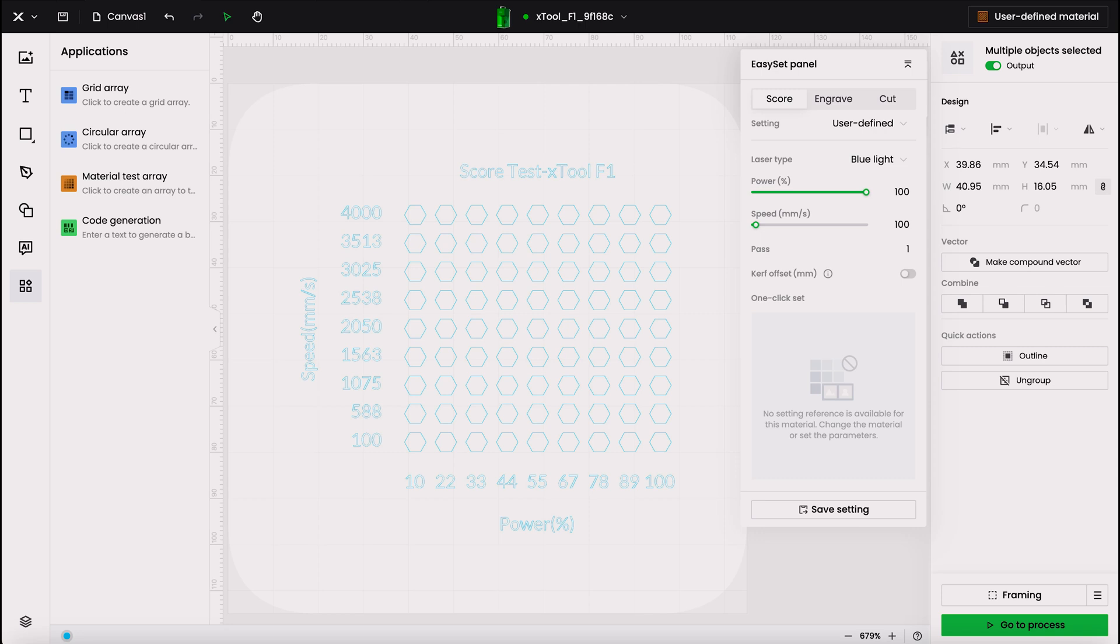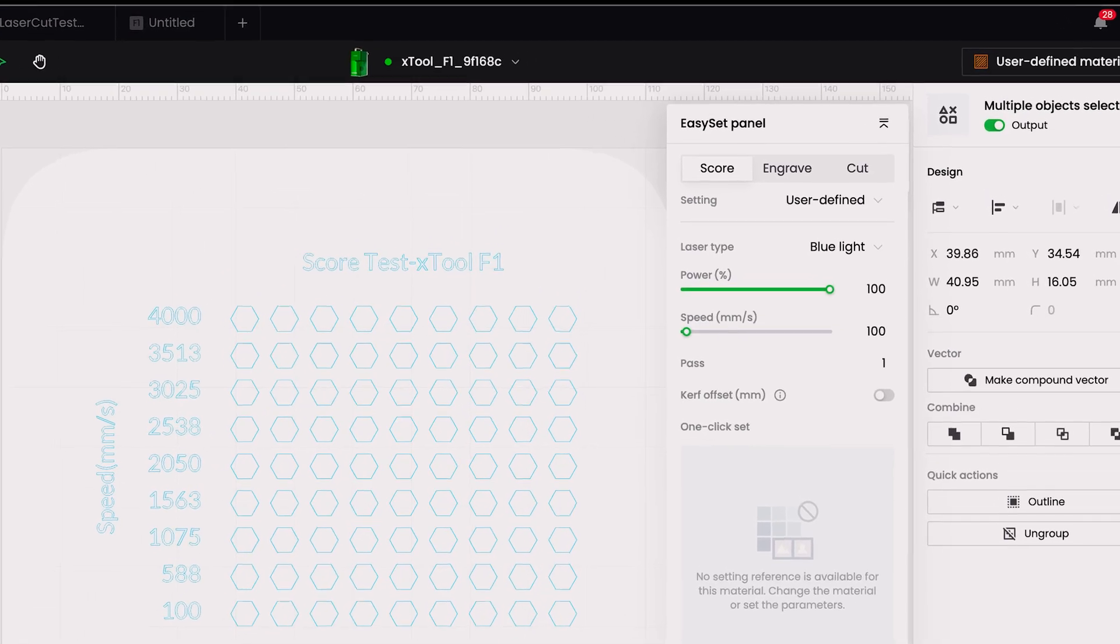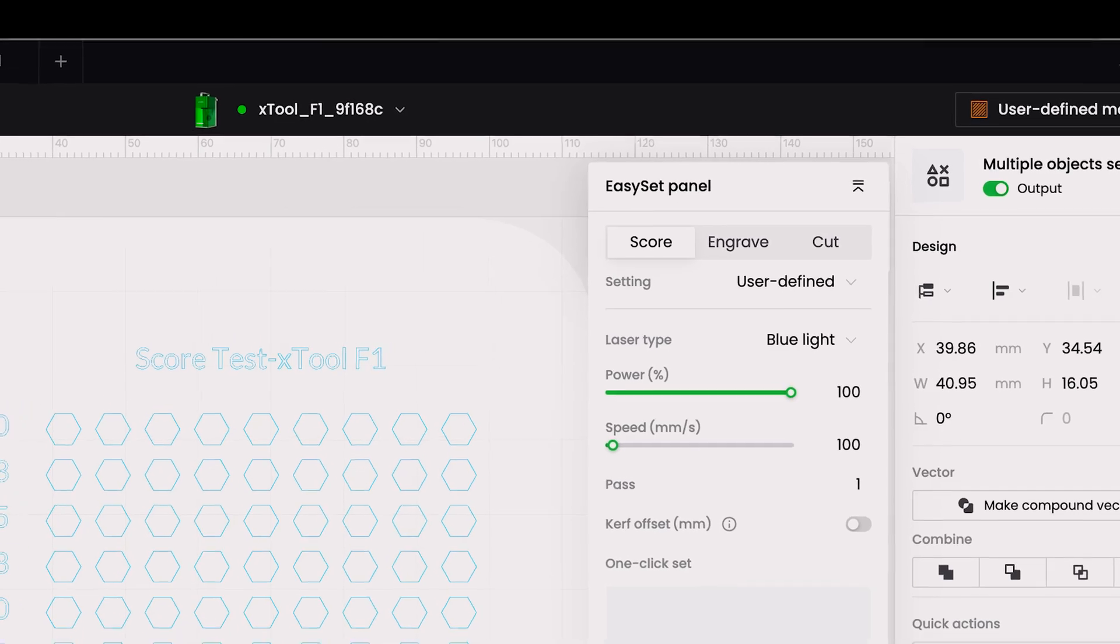We set up a 9 by 9 testing grid matrix with speed on one axis and power on another. For this series we set the Xtool F1 to the score setting. This allowed us to focus on power to speed ratios without having to worry about line frequency as a variable just yet.